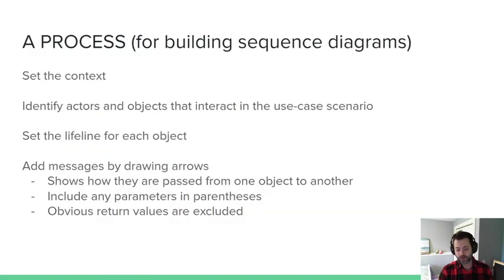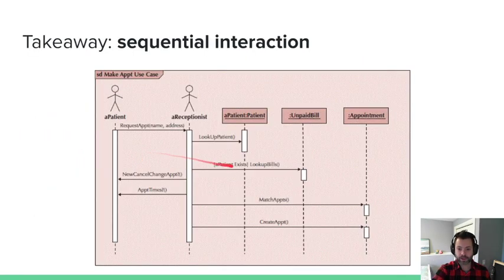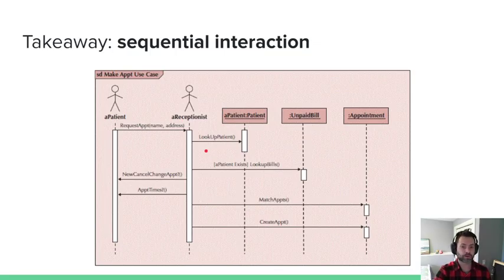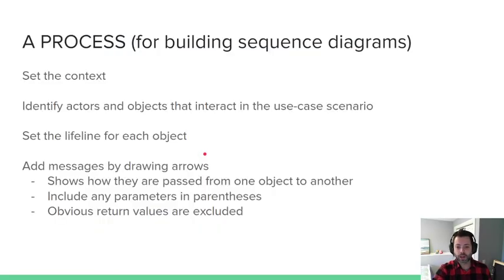Let's say that I request an appointment tomorrow at 9 a.m. The receptionist creates an appointment. And then I have an interaction where he needs to cancel it. Well, this appointment then would die because it needs to be destroyed because it no longer exists. So, that would be one way that your lifeline would end earlier. So, we'd set the lifeline. And then add your messages. Show the flow of information from one object to another. Show the interactions.